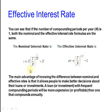You can see that if the number of compounding periods per year N is 1, both the nominal and the effective interest rate formulas are the same. The main advantage of knowing the difference between nominal and effective rates is that it allows people to make better decisions about their loans or investments. A loan or investment with frequent compounding periods will be more expensive or profitable than one that compounds annually.